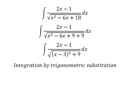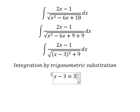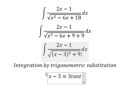So I will put s minus 3 equal to 3 times tan(t). If we substitute this in, we have 9 times tan²(t) plus 9. We can do factorization: 9 times (tan²(t) plus 1), and we change that to 9 times sec²(t).